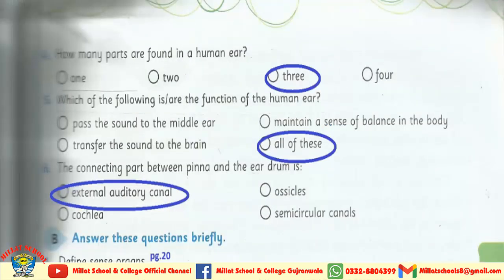Next, open page number 25. How many parts are found in a human ear? — 3. Which of the following is/are the function of the human ear? — All of these. The connecting part between pinna and the eardrum is the external auditory canal. Now, in Part B, see the short questions.